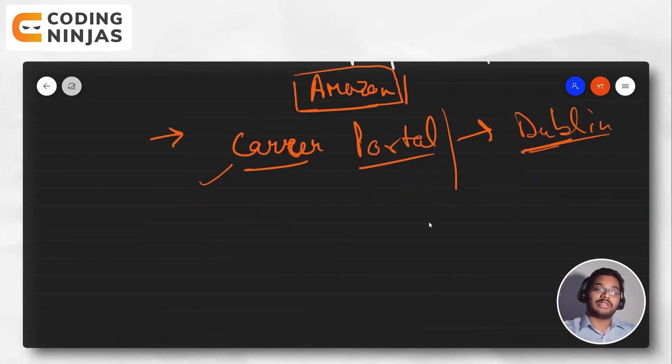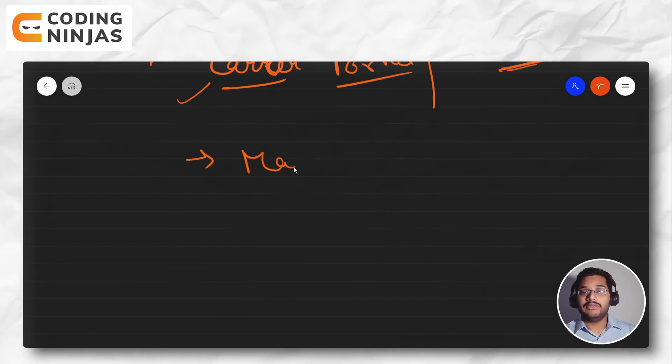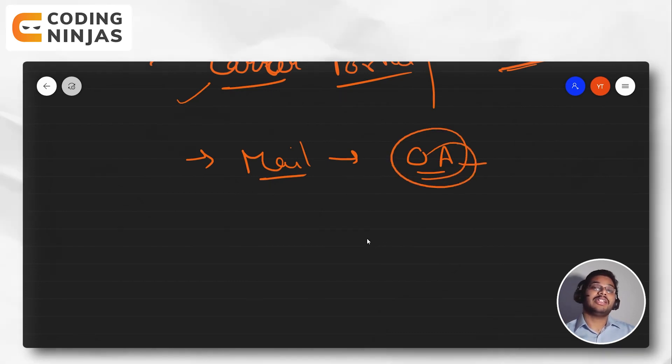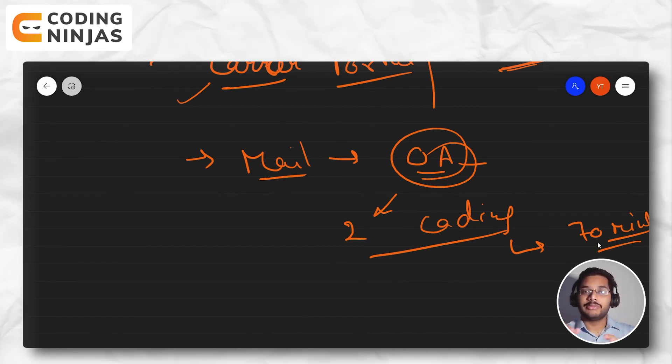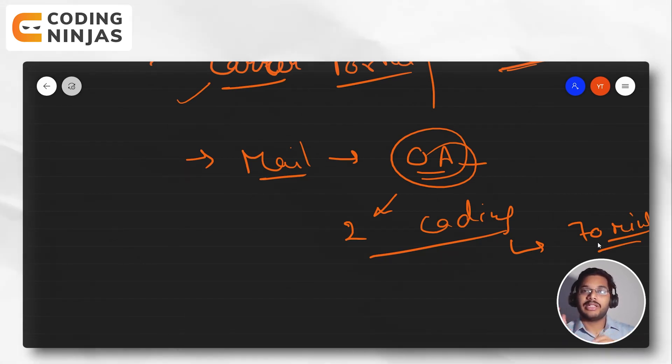I got a mail telling me that there is an online assessment round. In the online assessment, there were two coding questions to be solved in around 70 minutes - one hour 10 minutes was the allocated time. These were kind of easy to medium questions - one question was on array manipulation and the other was on some basic dynamic programming. Under 25 minutes, I was able to solve both questions easily.